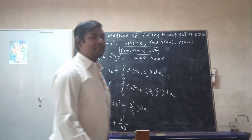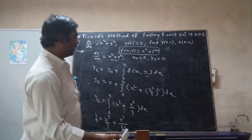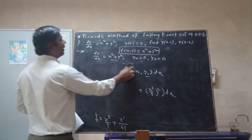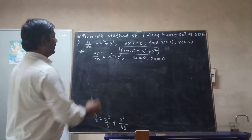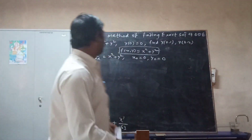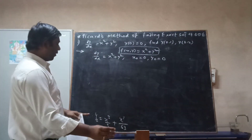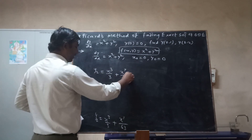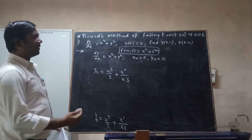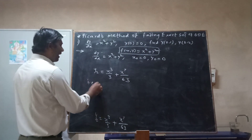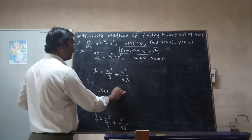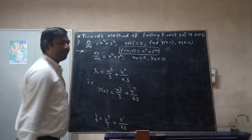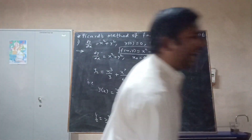So y2 = x cubed by 3 + x to the power 7 by 63 is your general solution at the end of the second iteration. For the given differential equation dy/dx = x squared + y squared with initial condition y(0) = 0, you can write the general solution as y(x) = x cubed by 3 + x to the 7 by 63.